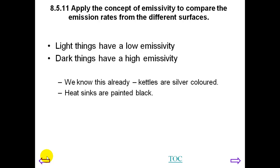For example, we know that kettles are silver-colored. The reason they're silver-colored is because silver colors emit less radiation. It will also absorb less radiation because it reflects it. But this is fine because the two things work together. A heatsink is what you get on the back of your computer, is painted black because you want to radiate as much radiation as possible from the computer to the environment. But black objects will also absorb this radiation as well.